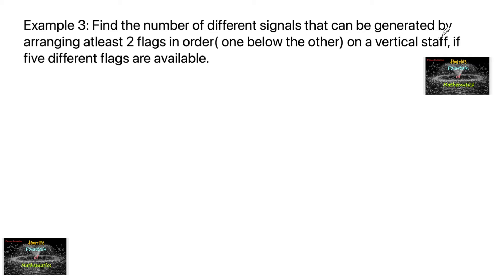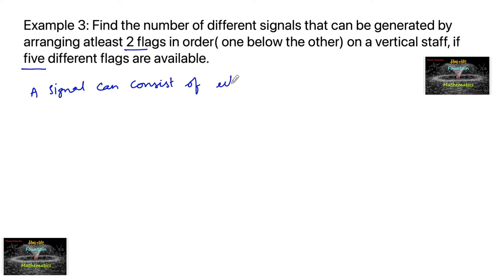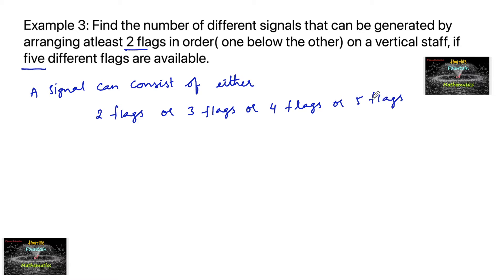Find the number of different signals that can be generated by arranging at least 2 flags in order, one below the other, on a vertical staff if 5 different flags are available. So here total 5 different flags are given, and we need to find the signals. A signal can consist of either 2 flags, 3 flags, 4 flags, or 5 flags, since the maximum is 5 different flags.